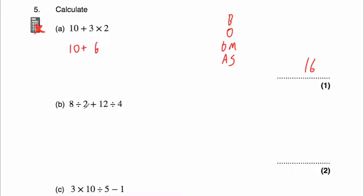Part b: work out 8 divided by 2 plus 12 divided by 4. We have two divisions and an addition. We do the divisions first, working left to right. 8 divided by 2 is 4, then 12 divided by 4 is 3. We still have the plus sign in between, so 4 plus 3 is 7. Our answer is 7.